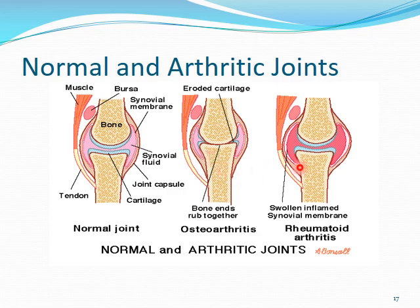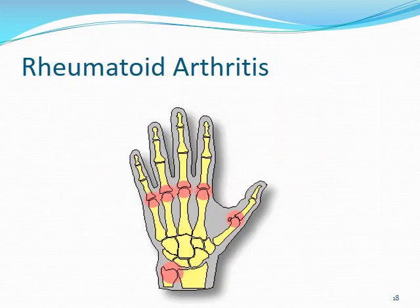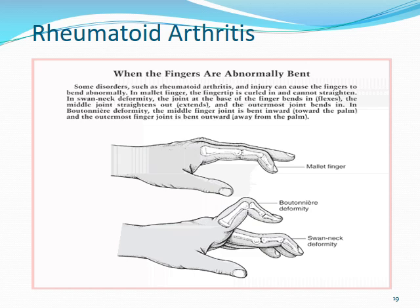In rheumatoid arthritis, cartilage degradation and bone-on-bone contact are less prominent, but there is a lot of inflamed, swollen synovial lining, leading to very enlarged joints. RA primarily affects small joints of the hands and feet, and patients may develop deformities like mallet finger, boutonniere deformity, and swan neck deformity, leading to decreased mobility and inability to perform normal daily activities.